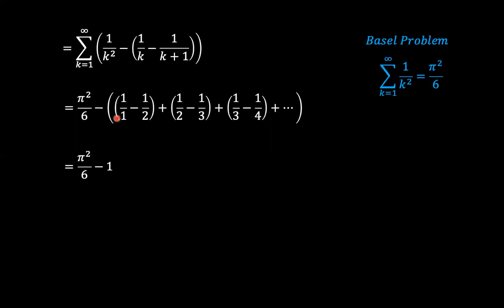So the answer to the very complicated integral of the ceiling function of 1 over the ceiling function of x minus x to the power of negative ceiling function of x, from x equals 0 to infinity, is pi squared over 6 minus 1. This is a beautiful problem. If you have any questions, please leave them in the comments below. If you haven't subscribed, please do so. Thank you so much — until next time.